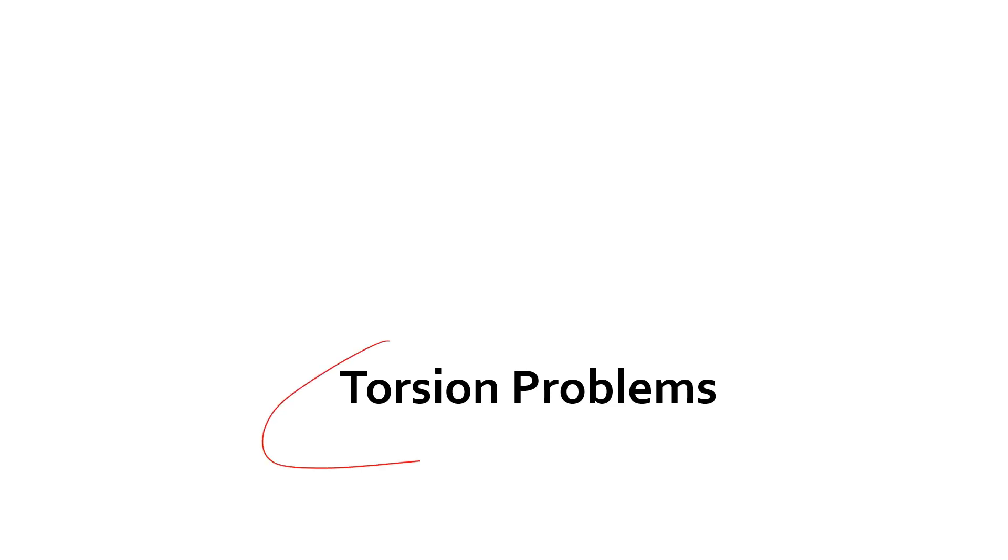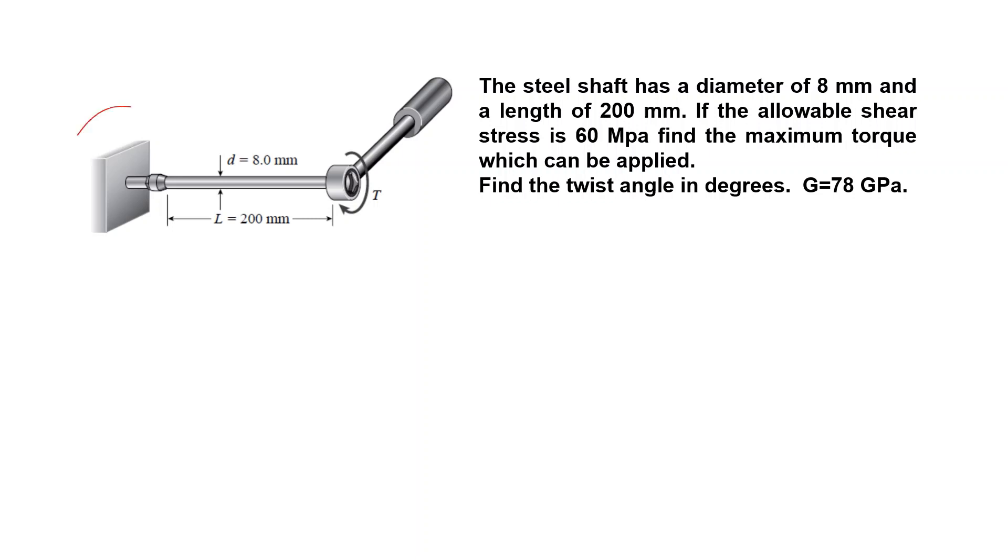In this video we will solve torsion problems. The first one: we have a steel shaft, diameter 8 millimeters and a length of 200 millimeters. For the material of the shaft, the allowable shear stress is 60 megapascals. Simple question: find the maximum torque which can be applied and find also the twist angle in degrees for this maximum load.